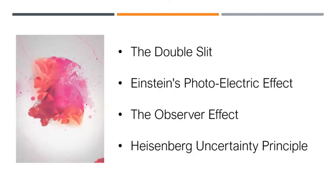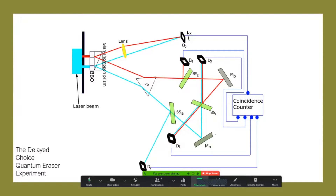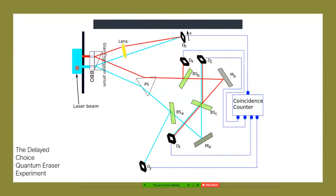This doesn't happen in the Newtonian, classical world. I stress that it's not that we haven't got sophisticated equipment — it appears that nature is actually not allowing us to know. Because as soon as we put a camera there to find out, the interference pattern changes to a clump.